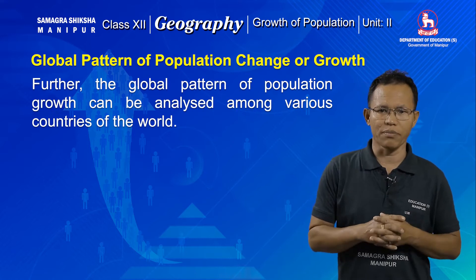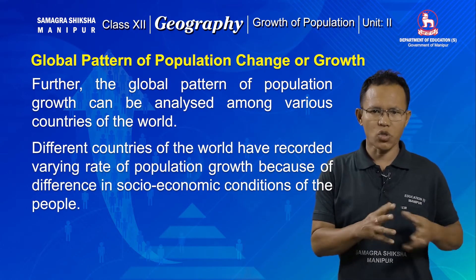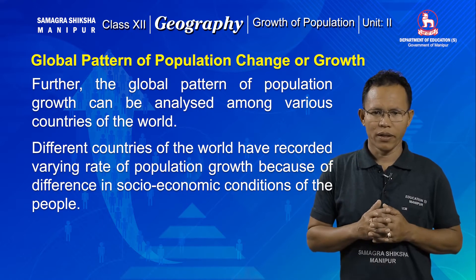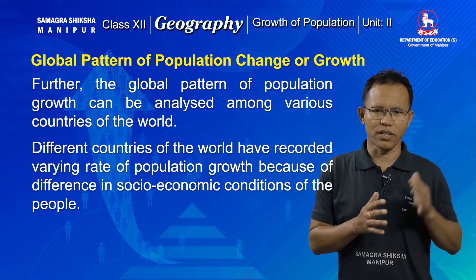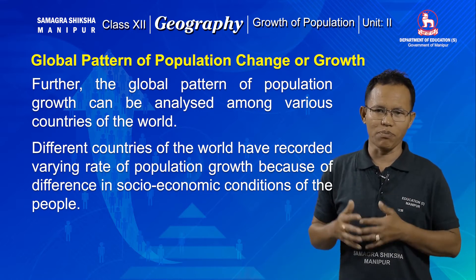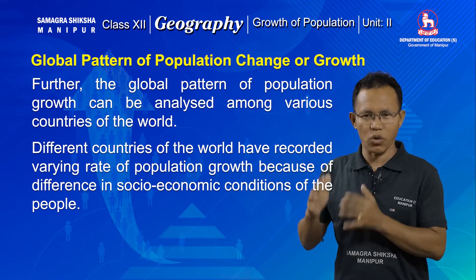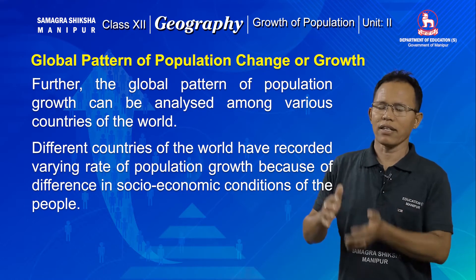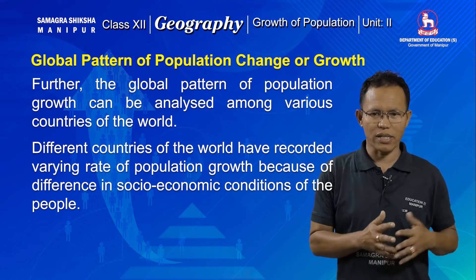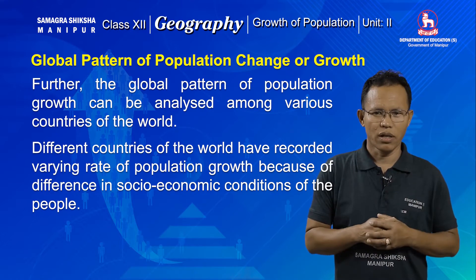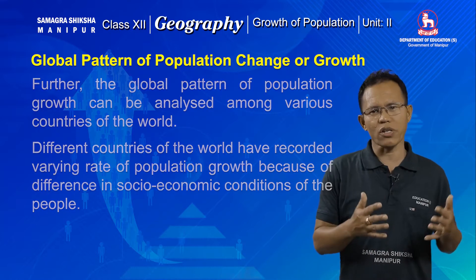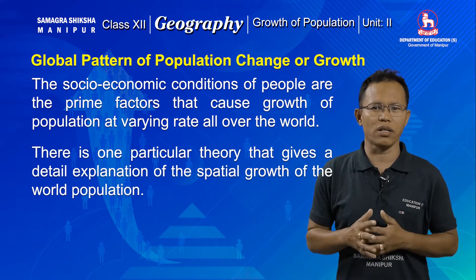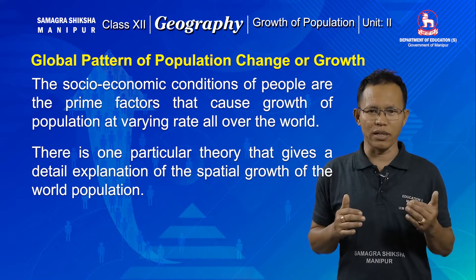The growth of the world population can be analyzed among different countries of the world. It shows that the growth rate is highly variable among different countries. Different countries recorded different rates of population growth. In less developed countries, the population growth was very rapid, while in developing countries the growth is also rapid. In developed countries, the population growth is rather slow and their population size is also very small. This is because of socio-economic differences among the people.